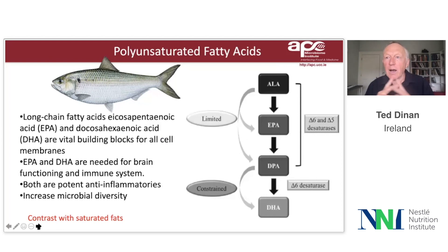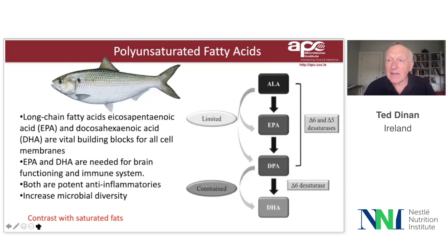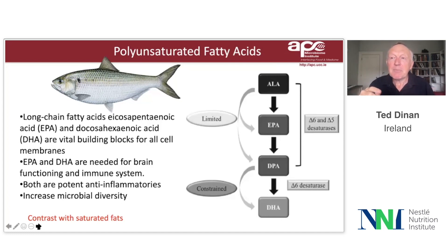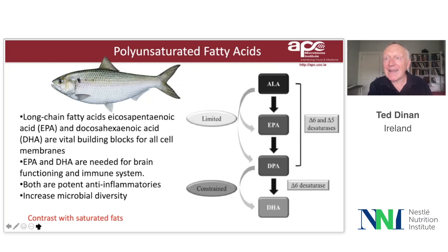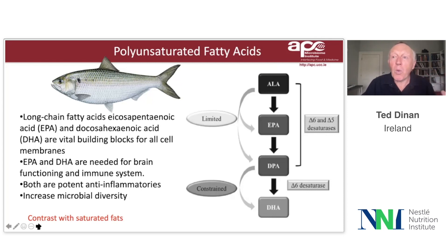Another component of the diet that can have a very good impact on the gut microbiota — but also directly on the brain — is fish oils in the form of EPA and DHA, which are polyunsaturated fatty acids. We were probably the first group to show that EPA actually promotes microbial diversity. It's always difficult to get children to eat fish, but fish, given its high levels of polyunsaturated fatty acids, is a very good dietary component because the developing brain needs polyunsaturated fatty acids, and they also promote diversity in the gut microbiota.